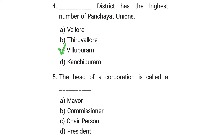The fifth question is: the head of a corporation is called a blank. Options: Mayor, Commissioner, Chairperson, President. The correct answer is option A, Mayor.